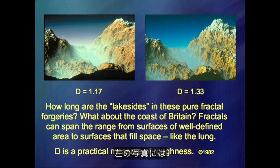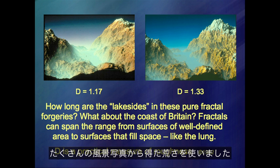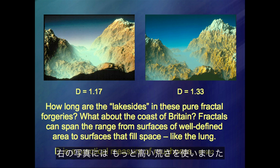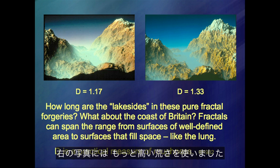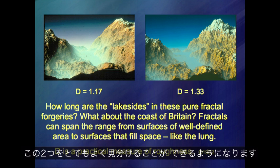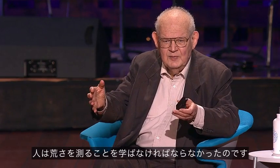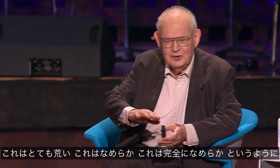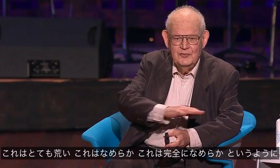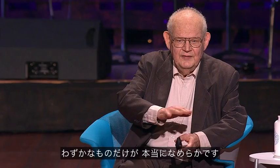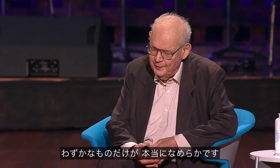On the left, I took the roughness copied from many landscapes. To the right, I took higher roughness. The eye, after a while, can distinguish these two very well. Humanity had to learn about measuring roughness. This is very rough, and this is sort of smooth, and this is perfectly smooth. Very few things are very smooth.